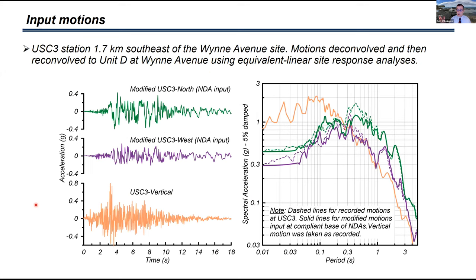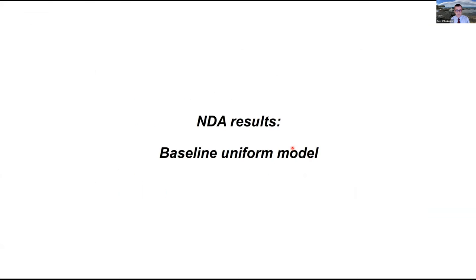We then need the input motions and as I mentioned we're going to use the USC3 station, which is 1.7 kilometers away. We take these motions and they're shown here on the left as time histories and on the right as acceleration response spectrum, aligned with the direction of Wynn Avenue. This motion was deconvolved down to depth and then propagated back up to an outcrop for the underlying Pleistocene sands. That deconvolution didn't change the record much. The dashed line here is the original recording, the green line is what we have as an outcrop for the Pleistocene sands. So there's some modest differences. Sensitivity results show you get essentially the same response with either motion.